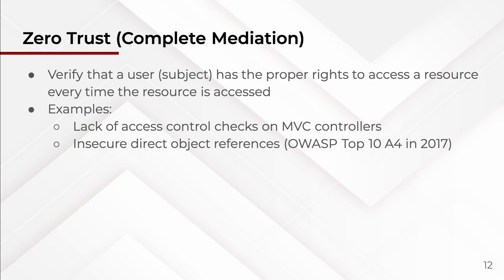The next principle is zero trust. This used to be on OWASP Top 10 in 2017 at number four — it was very common to forget authorization. A user is authenticated, but should only be able to access account slash one where their ID is one. It was often the case that authorization checks were forgotten — whether the user is actually allowed to access that account. You should always check whether the user has proper rights to access a resource.